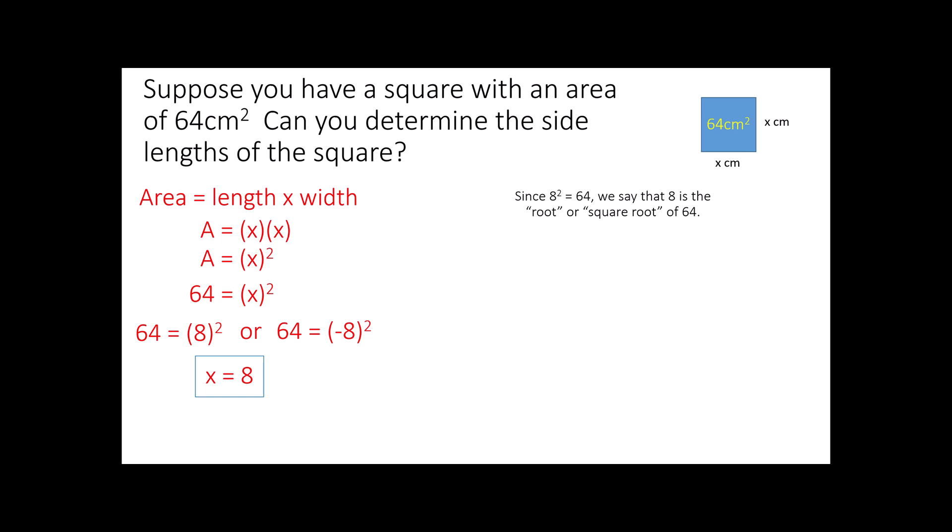Now, more to our point today. Since 8 squared is 64, 8 is referred to as being a root or a square root of 64. Now, I do want to make the point that the idea of this as not just 8 to the second power, but 8 squared, does go back to the geometric representation of a square, and how to find the area of a square. Just a little historical note. That is where we derive that name from. But 8 is considered to be the root, because 8 is the side length that is used when you have an area of 64.